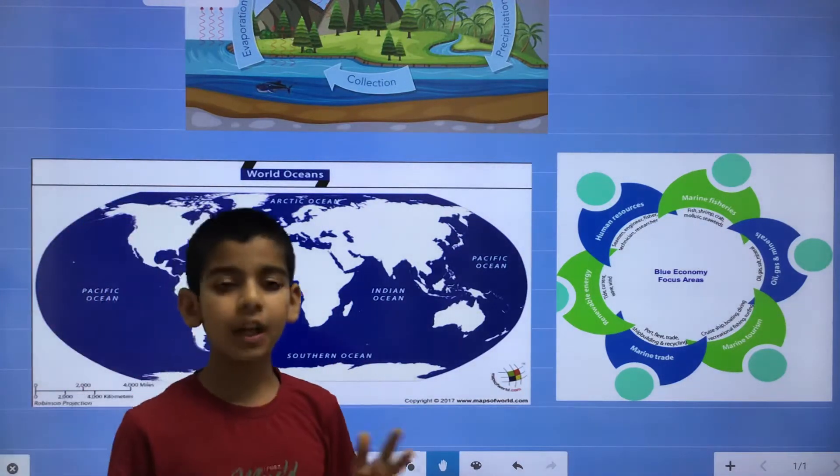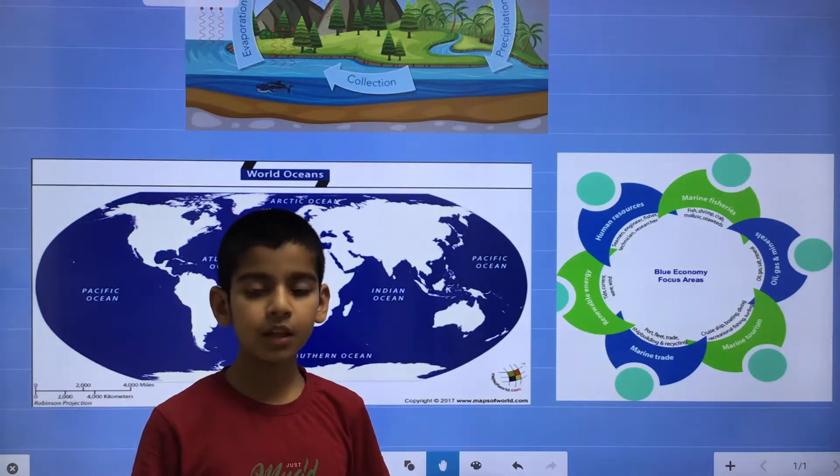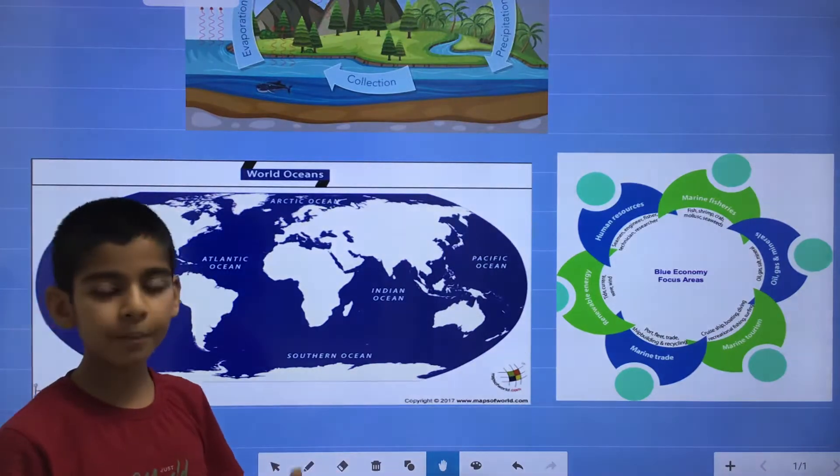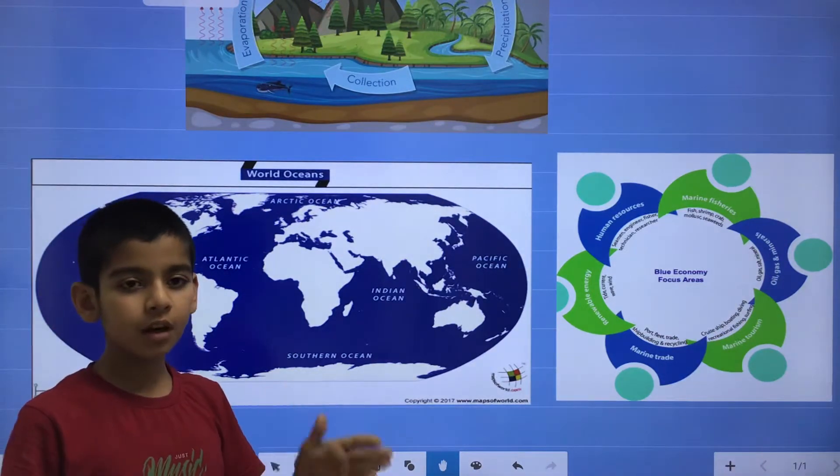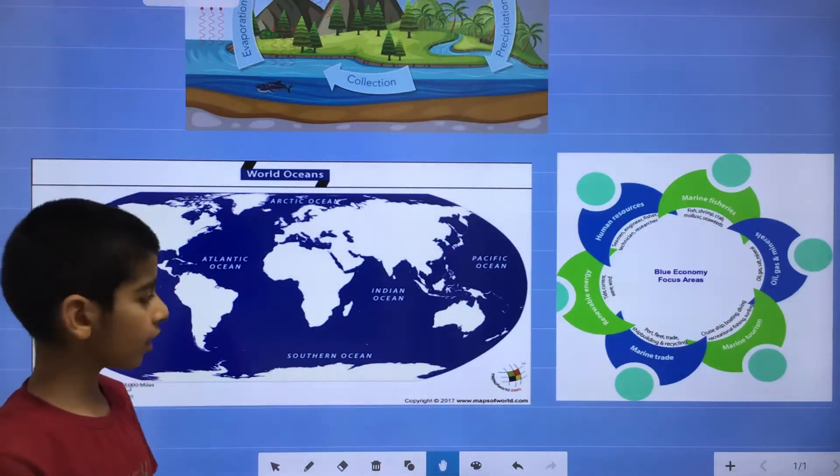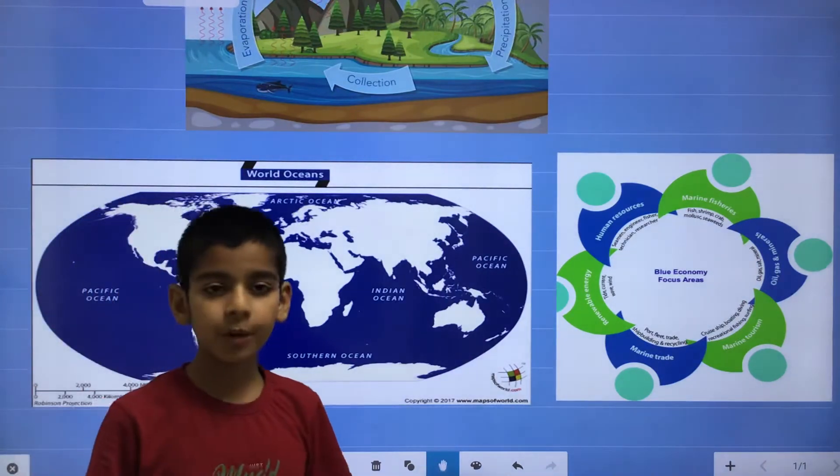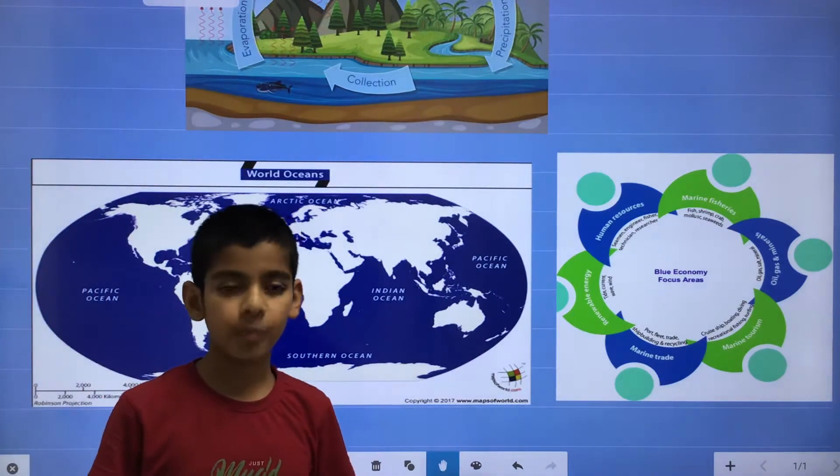Pacific Ocean is the largest ocean and the Pacific word means peaceful area. And it covers one third part on the earth's surface. And the deepest point of the Pacific Ocean is Mariana Trench.